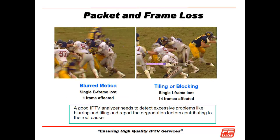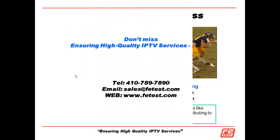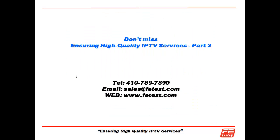If we take a picture of what this all means: here we have a single I-frame that's lost, and we can see the hole in the data because we lost that entire group of pictures. Whereas if we lose a B-frame, we see a motion issue — some motion artifacts here and here. So a good IPTV analyzer needs to detect excessive problems like blurring and tiling, and more importantly report the degradation factors that contributed to the cause of that degradation. You won't want to miss Part 2 of Ensuring High Quality IPTV Services.